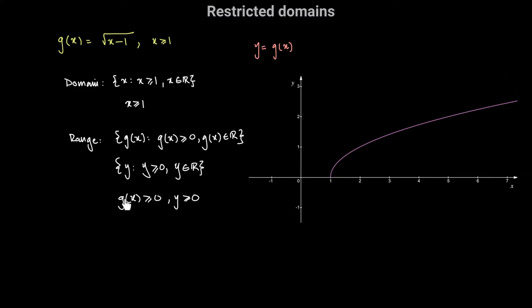The range is the set of all real numbers greater than or equal to 0. So the domain is all real numbers greater than or equal to 1, and the range is all real numbers greater than or equal to 0. The domain was restricted because x minus 1 must be greater than or equal to 0 — we can't take the square root of a negative number — therefore x must be greater than or equal to 1.